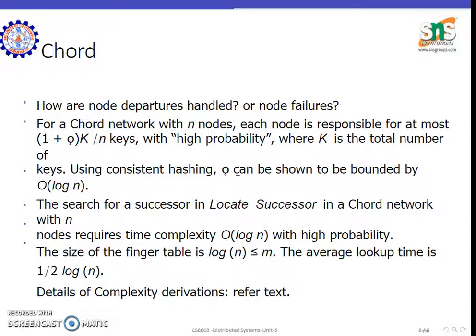If a node fails, what do we have to do? Each node is responsible for almost 1 plus p or 10 minus p. It is a high probability where k is the total number of keys. In order to find O(log n) for searching the locate successor, the complexity time is t equal to O(log n) with high probability. The size will be 1 by 2 log of n. So here Chord plays a vital role.